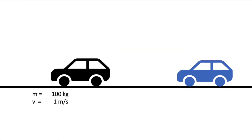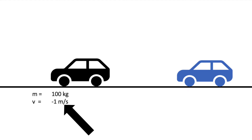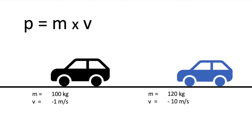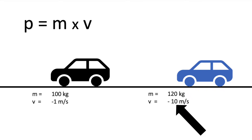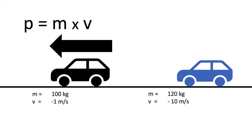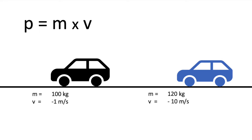The black car has a mass of 100kg and a velocity of minus 1m per second, which means the car will be moving from right to left. The blue car has a mass of 120kg and a velocity of minus 10m per second, so this car will also be moving from right to left.